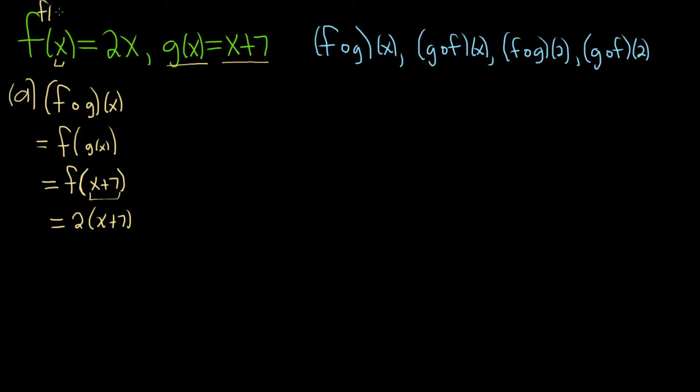So you would get, here I'll do it up here so you see it, x plus 7. Just replacing it, you get 2 times (x plus 7). That's all you do. And then just distribute. So we get 2x plus 14. So that would be the answer to the first part.